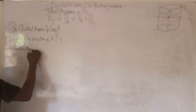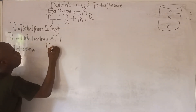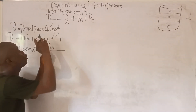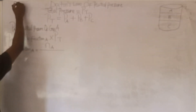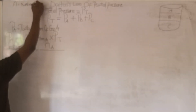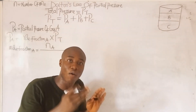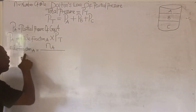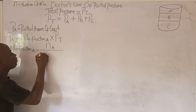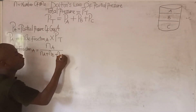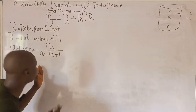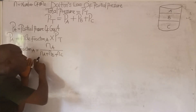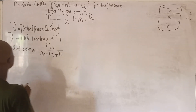The next question is: what is the mole fraction of Gas A? The mole fraction of Gas A is given by the formula: number of moles of Gas A, over the sum of all moles — which is number of moles of Gas A plus number of moles of Gas B plus number of moles of Gas C. If you are looking for the mole fraction of Gas B, then the numerator becomes the number of moles of Gas B, over the same denominator.